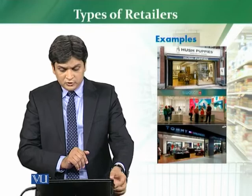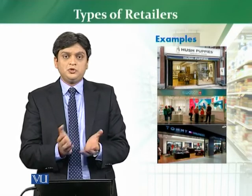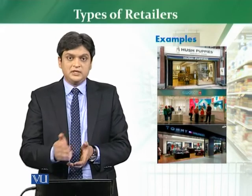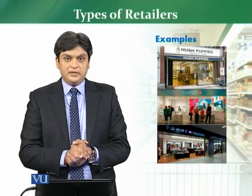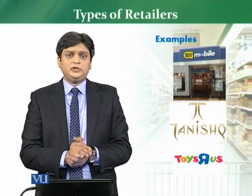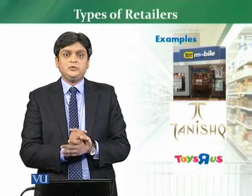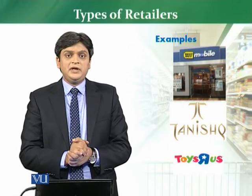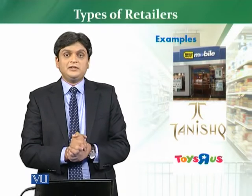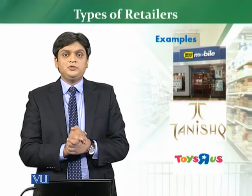I want to share some examples on your screen. We have an example of a specialty store which is selling a particular product depth — Swatch watches. We have an example of Tommy Hilfiger, and an example of fabric and clothing — these are international examples. In the Asian context, we have an example of Tanishq, which is a jewelry specialty store selling a particular category of jewelry. Best Buy's mobile stores are specialty stores which sell in a mobile category. All the examples we have discussed elaborate a specialty store very well.